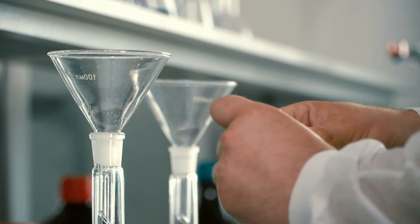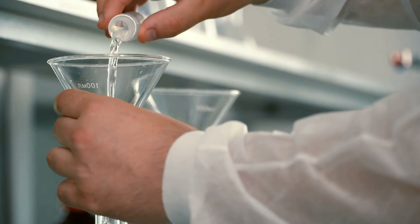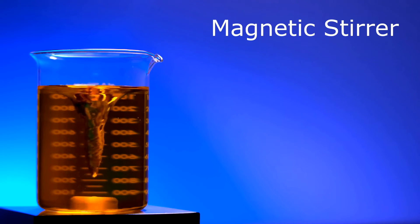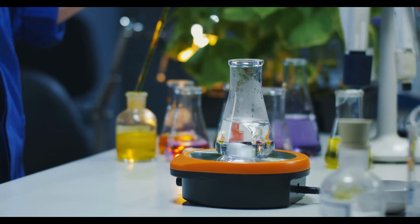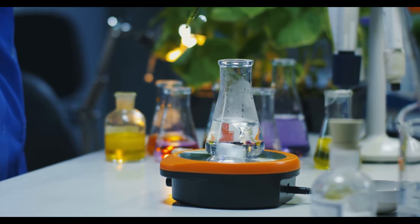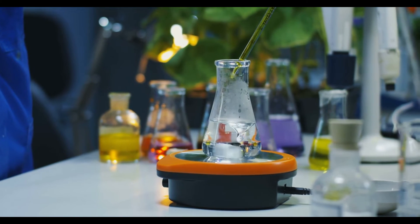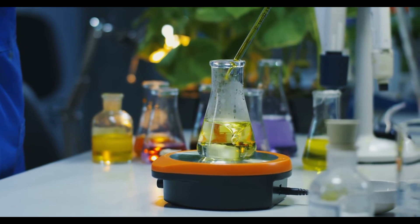Magnetic stirrers use a rotating magnetic field to move a stir bar around in liquid samples. The movement of this stir bar mixes the sample thoroughly with rapid movement and agitation.